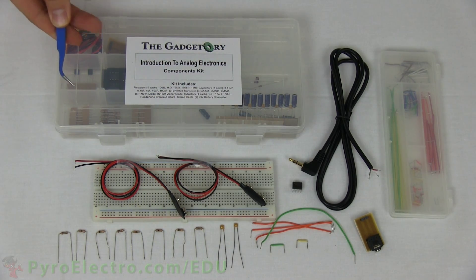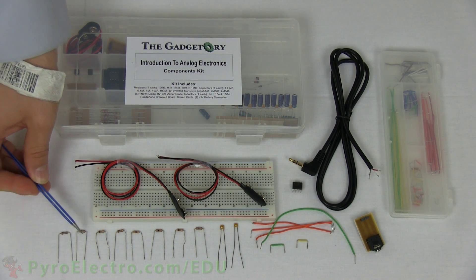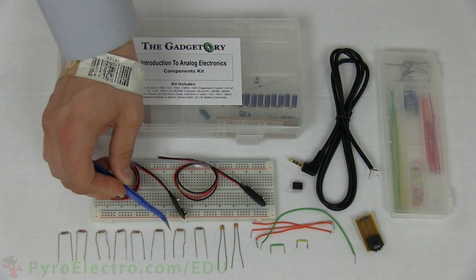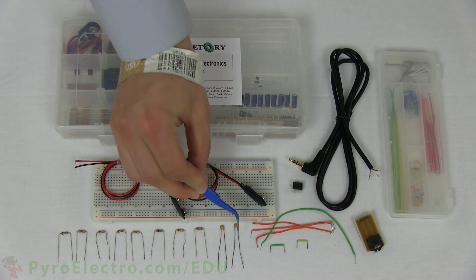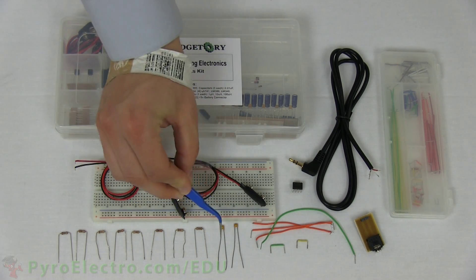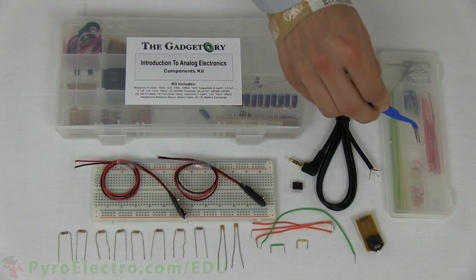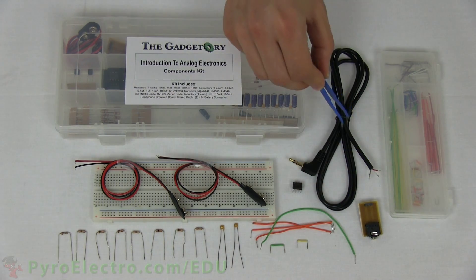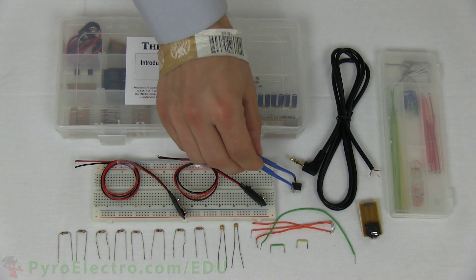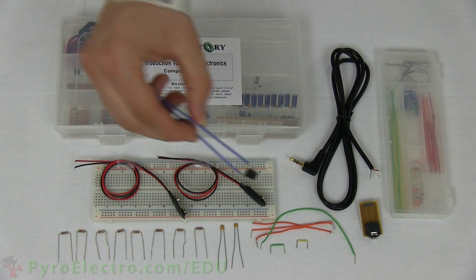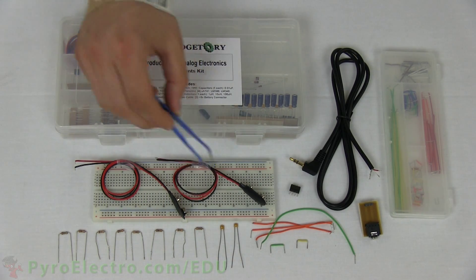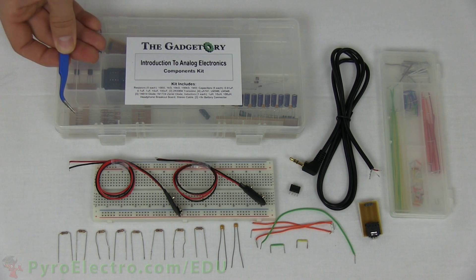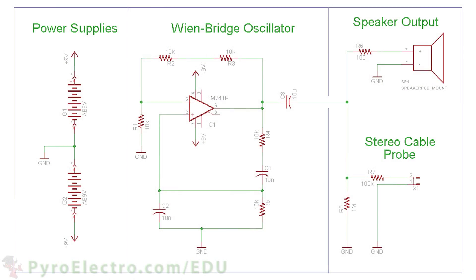From the parts kit, we'll need a 1 megaohm and 100 kiloohm resistor, five 10 kiloohm resistors, and one 100 ohm resistor, two 10 nanofarad capacitors, some jumper wire from the wire kit, the stereo jack breakout board, a stereo cable, one 741 op-amp, and two 9-volt battery connectors.